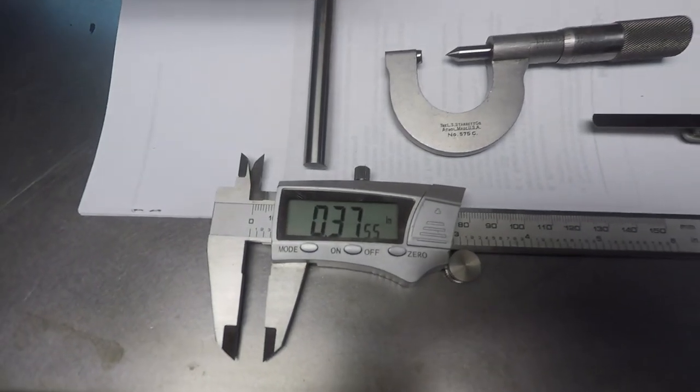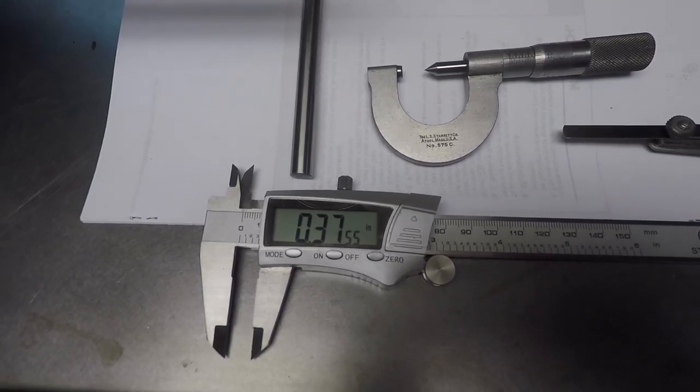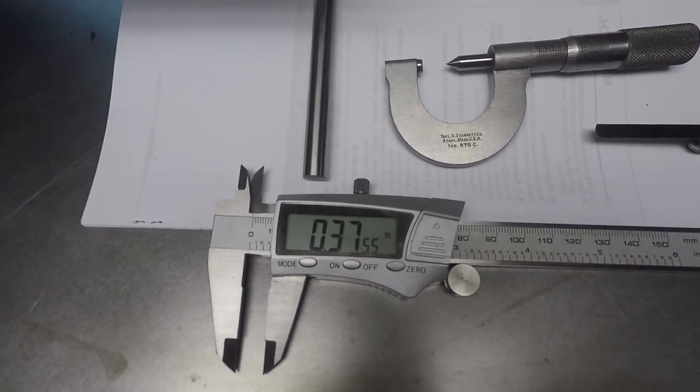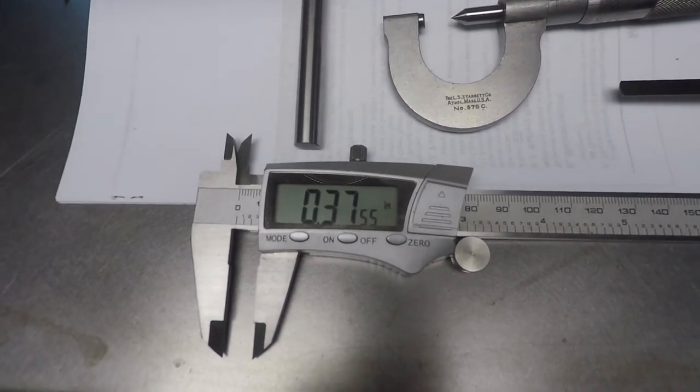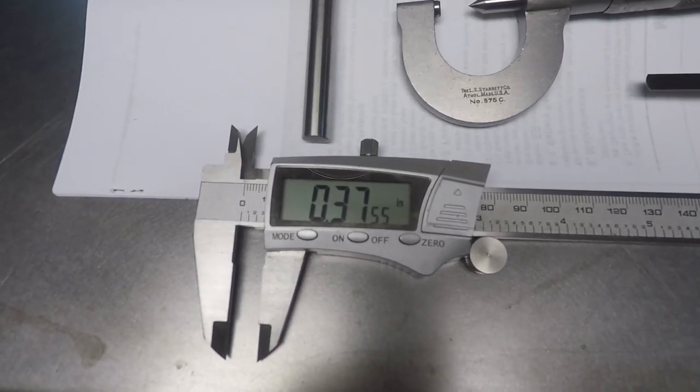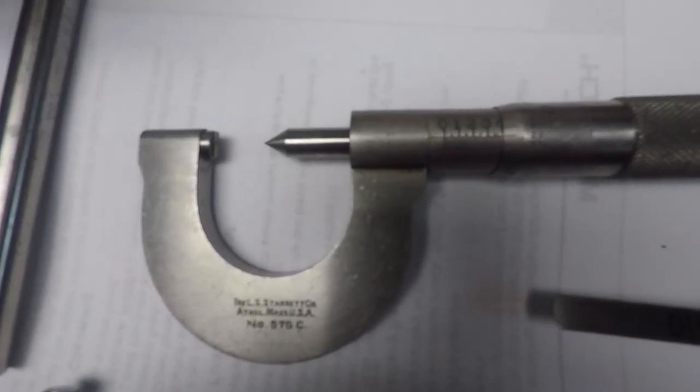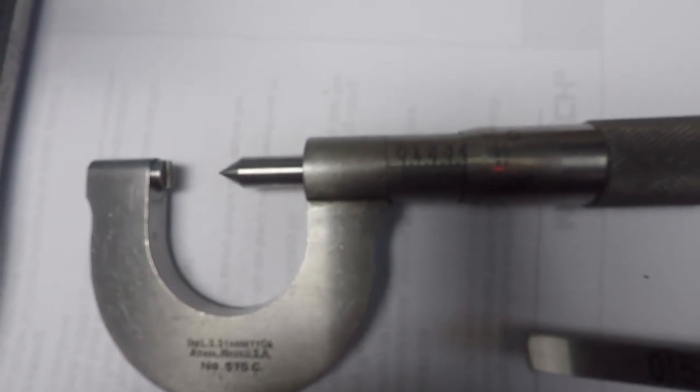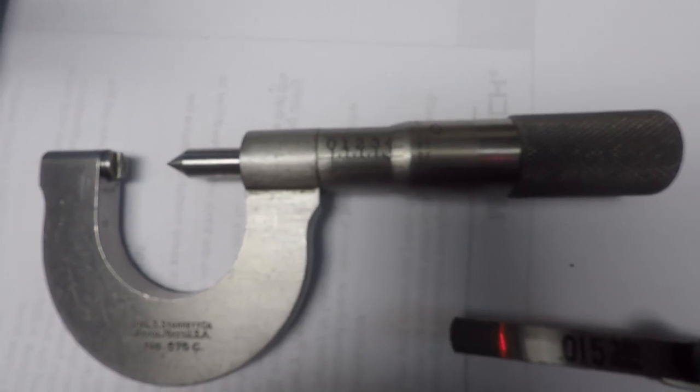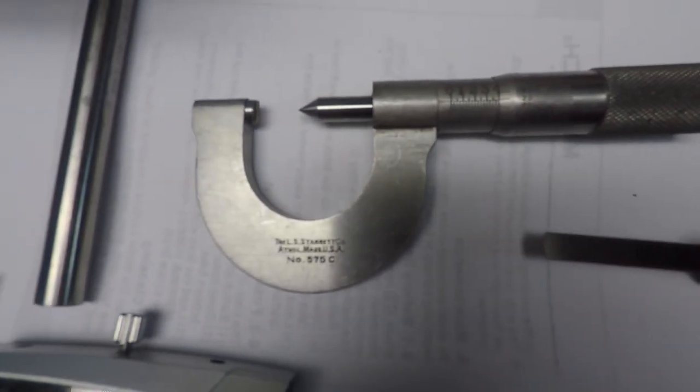Again, here for instance is the measurement of the three-eighths bar, which should be 3.750. The digital is showing an extra five ten-thousandths, I'm not so worried about that, but the Starrett micrometer is reading twenty-one thousandths over the appropriate measurement. I don't know if you can see that, but we're...